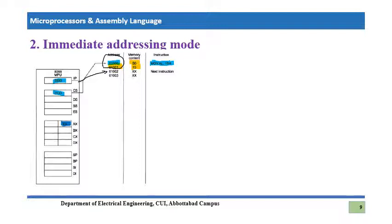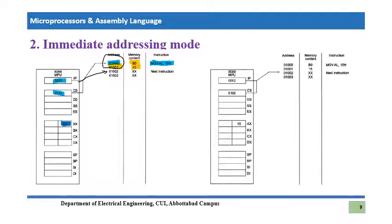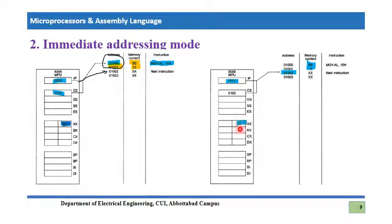Once the instruction executes, IP increments by two to point to address 01002, which is the next instruction in the code segment. The effect of MOV AL, 15H is that the value 15H is moved into the lower byte of the AX register. This is how immediate addressing mode works.